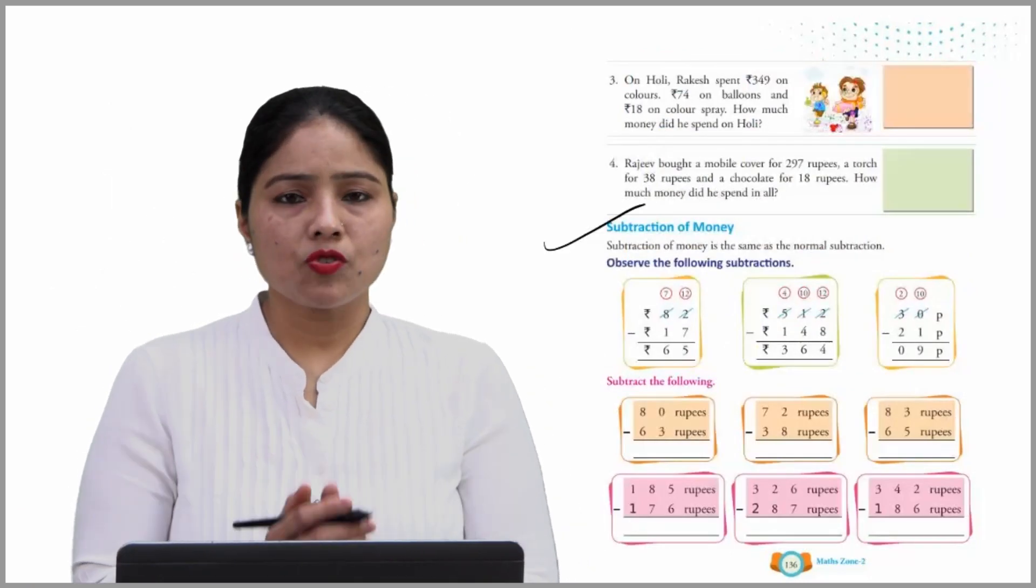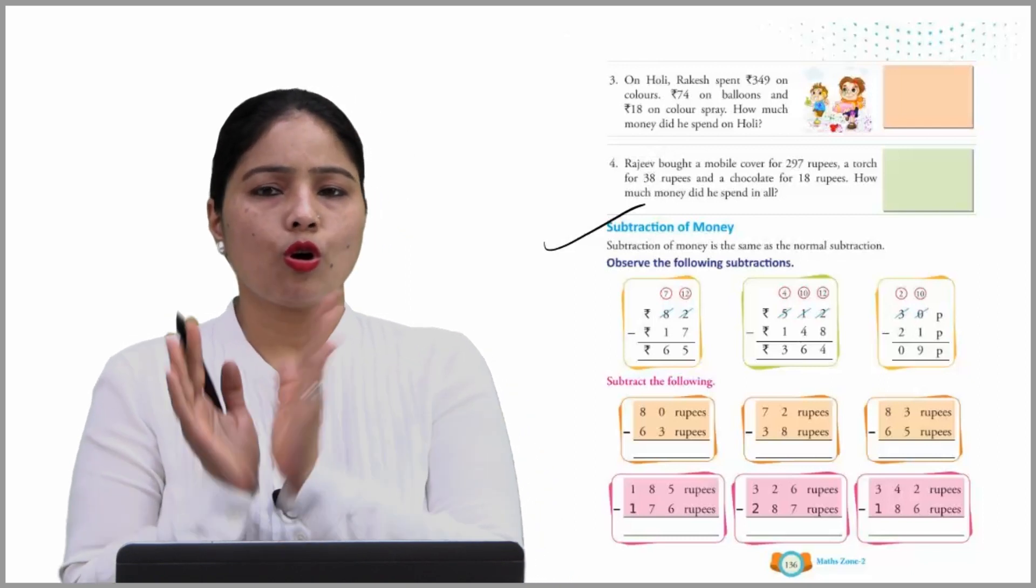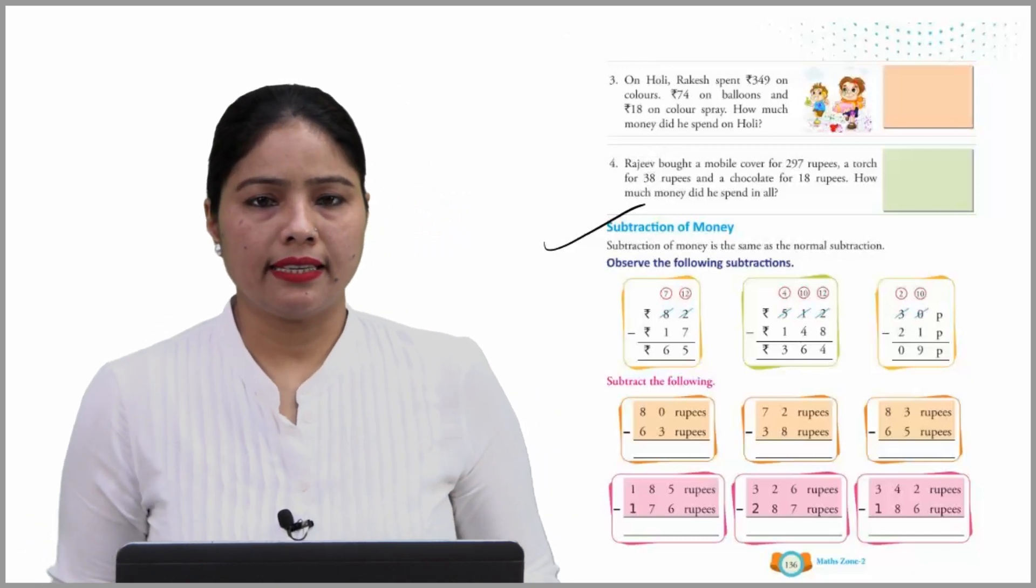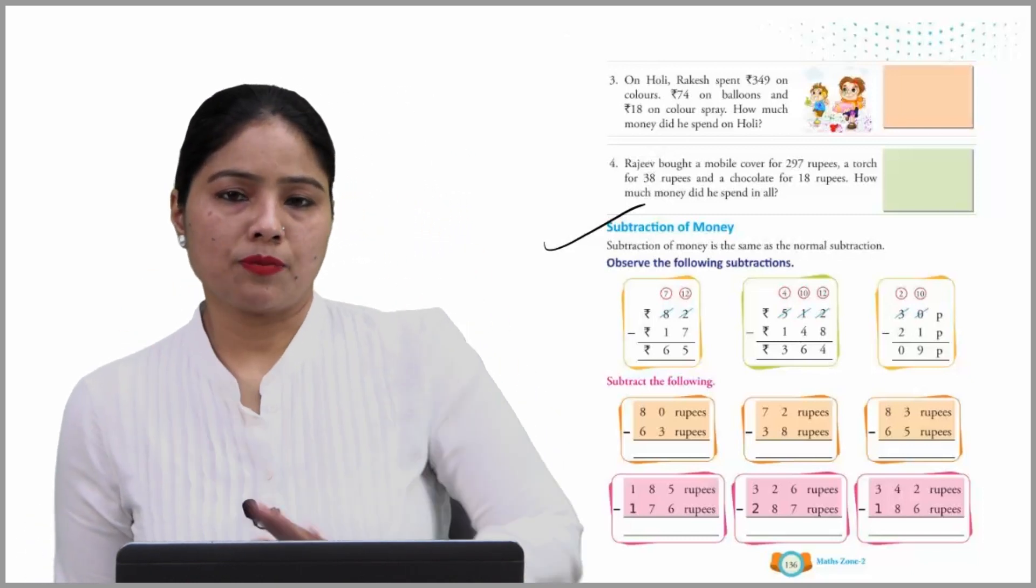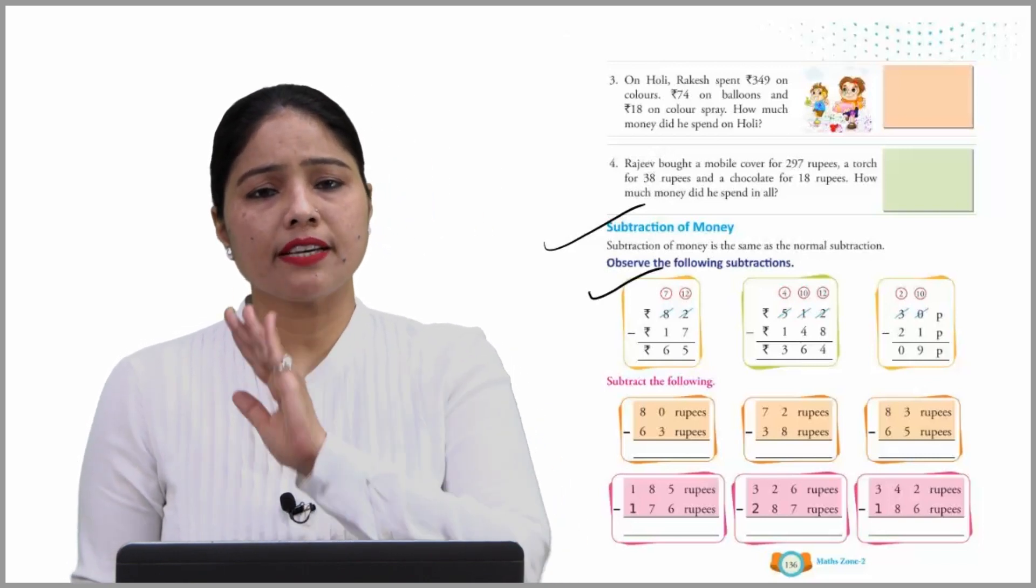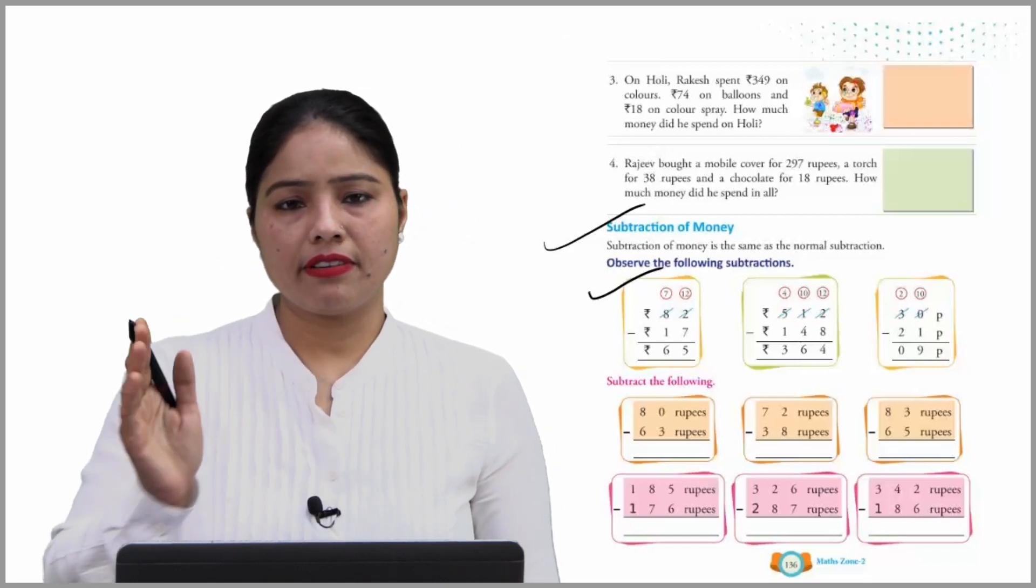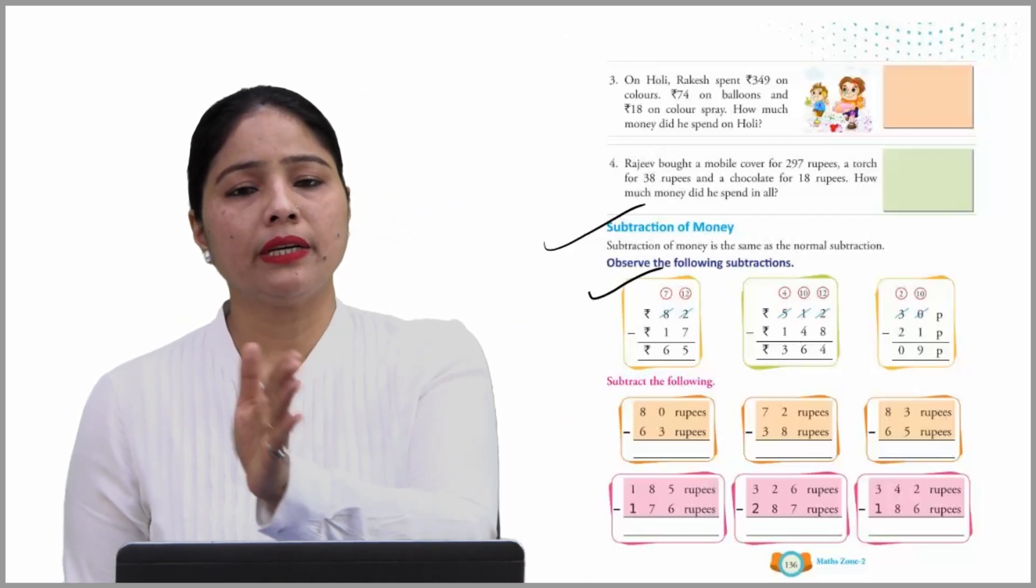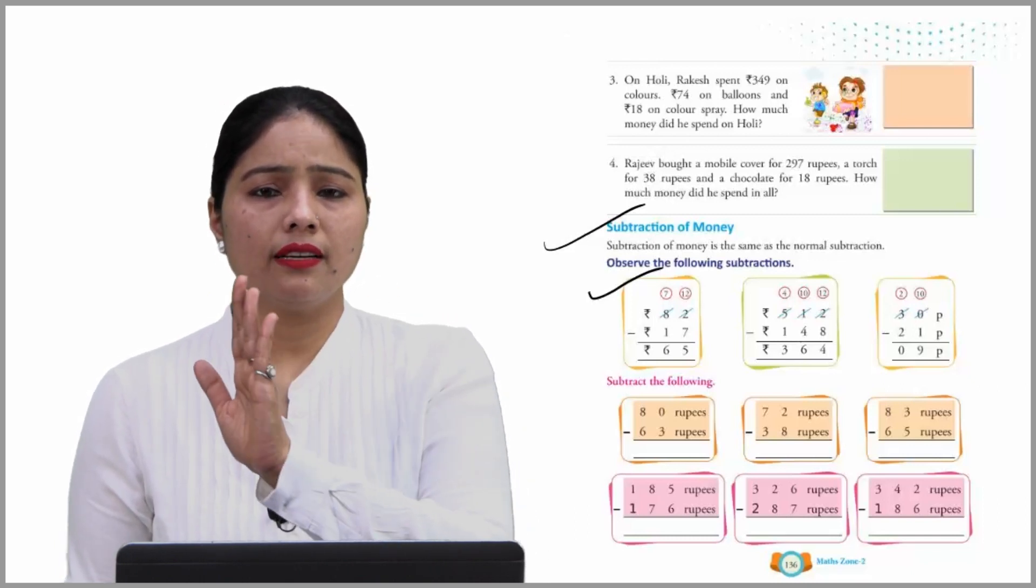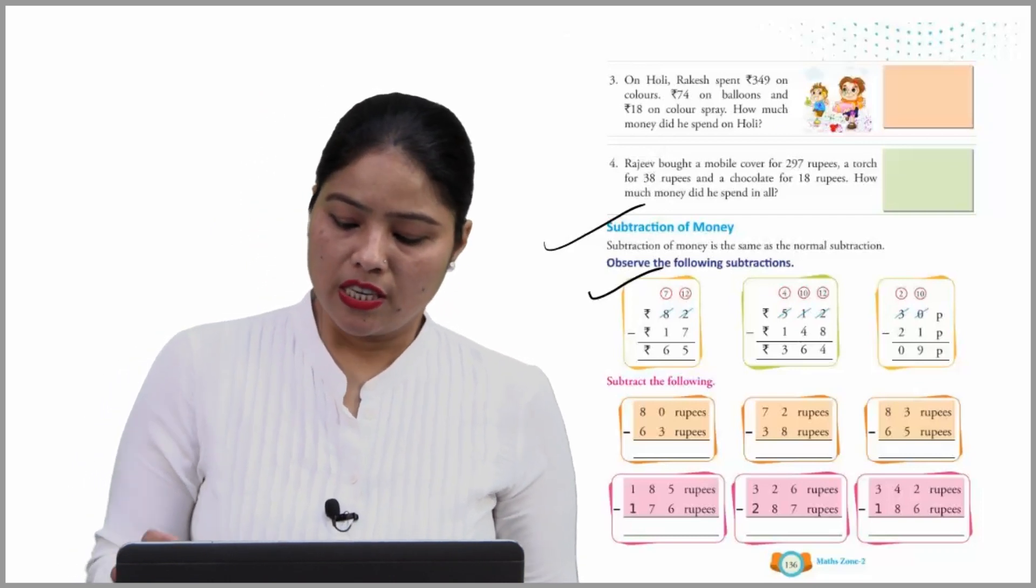Now next is subtraction of money. Subtraction of money is the same as the normal subtractions. Observe the following subtractions. First one is 82. We have to subtract 17 from 82. Start with one's place. 2 minus 7 can't be done, just borrow. It becomes 12. 12 minus 7 is 5. And it remains 7. 7 minus 1 is 6. So this is simple subtraction.